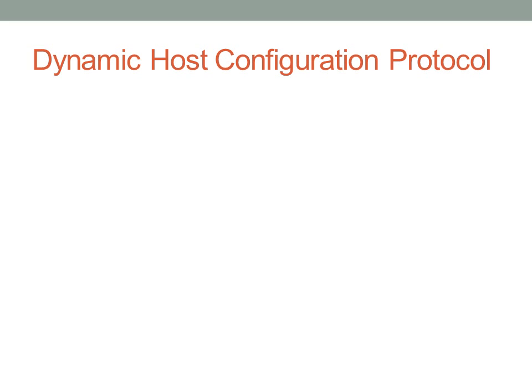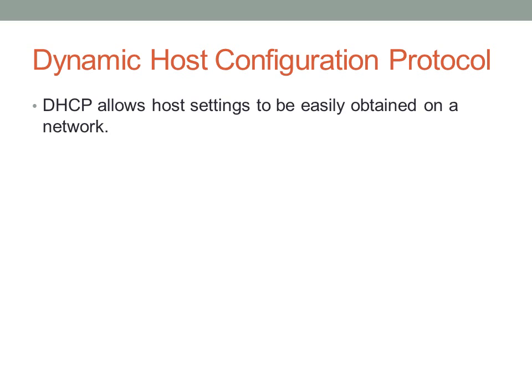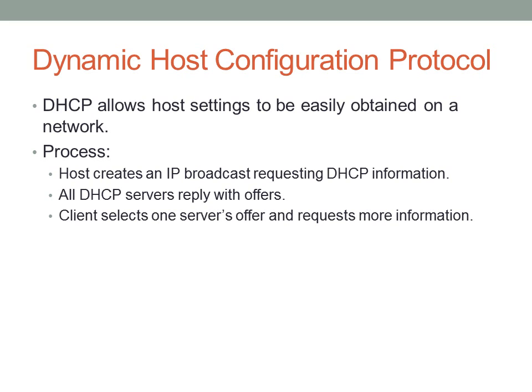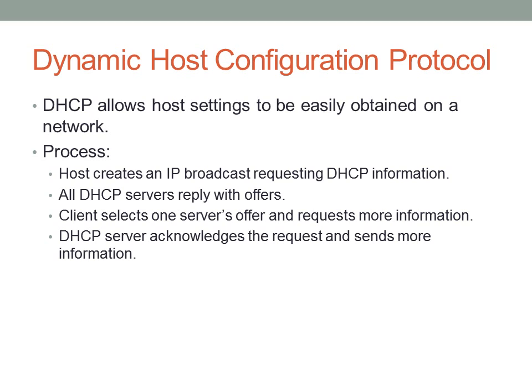DHCP — dynamic host configuration protocol — is something you've probably used before, especially if you've connected to a university network. DHCP allows host settings to be easily obtained on a network, most commonly IP addresses. The process works as follows: the host creates an IP broadcast saying if there are any DHCP servers out there, send me information. All DHCP servers on the network reply with offers, and the client selects one — usually the first received — then requests additional information such as an IP address, a default gateway, or DNS server details. The DHCP server acknowledges and sends all that information down.